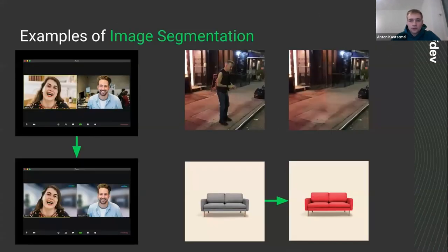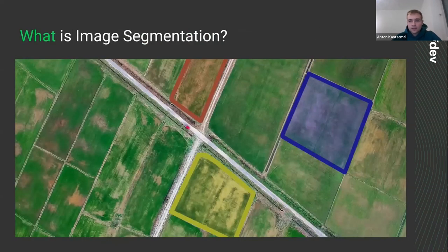Have you ever wondered how your sofa would look in red? Or maybe you took a great photo, but there's that one person strolling across the view and you want to remove them. Or have you ever tried blurring the background of your video call and wondered what kind of evil sorcery knows where the background is? All this cool stuff is powered by an AI technique called image segmentation. It allows you to find the exact shape and location of an object within an image, and you can extend this task into a number of different problems.